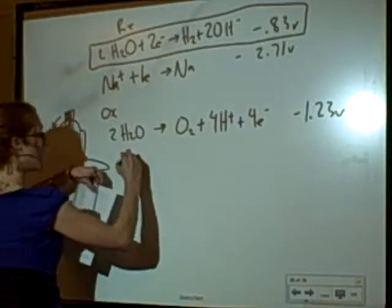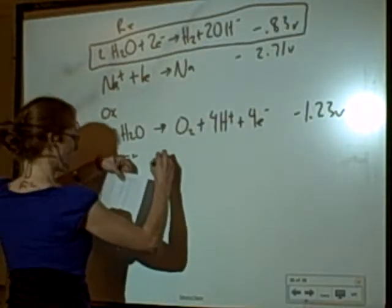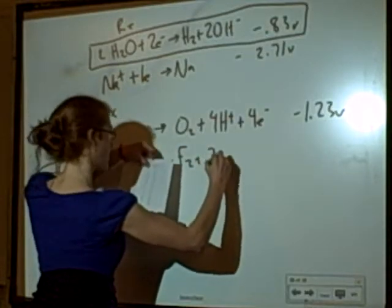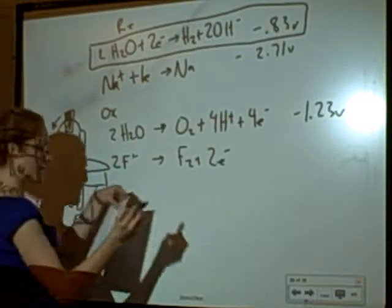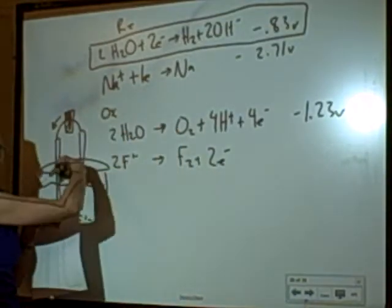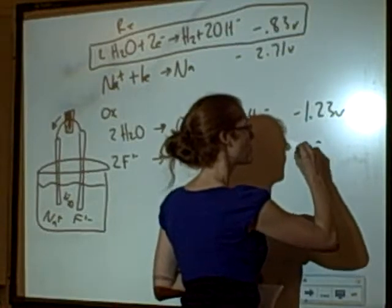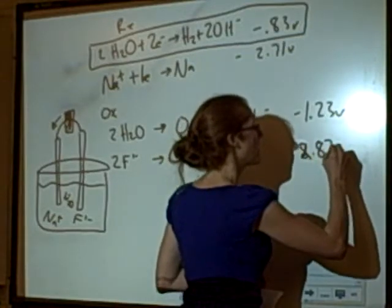Fluoride. When fluoride is oxidized, it turns into F2 plus two electrons. And that takes two fluoride ions. And that is, when it goes this way, favored by 2.87. So, it's going to be negative 2.87 volts.